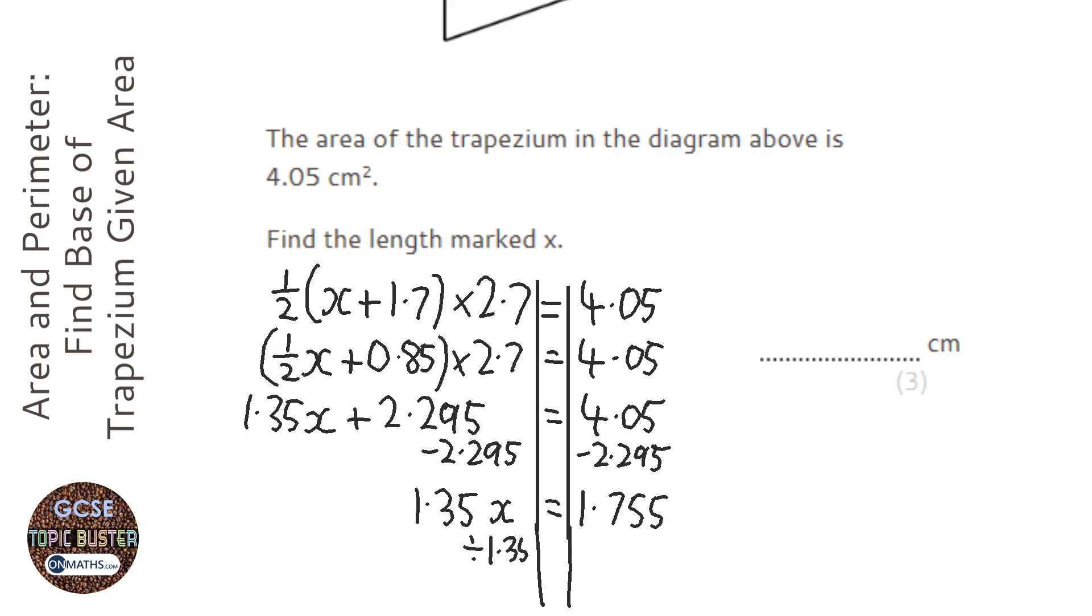Divide by 1.35 to get x on its own. So divide by 1.35, and it gives me the answer of 1.3.